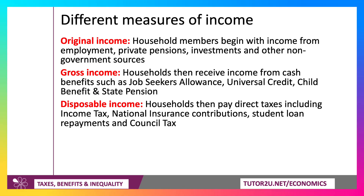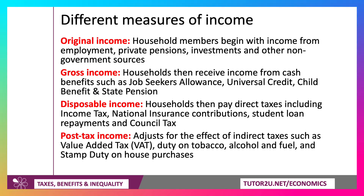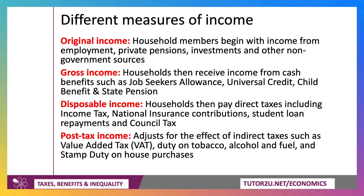So disposable income is gross income minus direct taxes, and then post-tax income adjusts for the effect of indirect taxes. You'll be familiar with some of these: VAT, duty on tobacco, on drink, on fuel, and also stamp duty on house purchases. So people have original income to which they may add from benefits, but they pay their direct taxes and also their indirect taxes — leading ultimately to post-tax income.